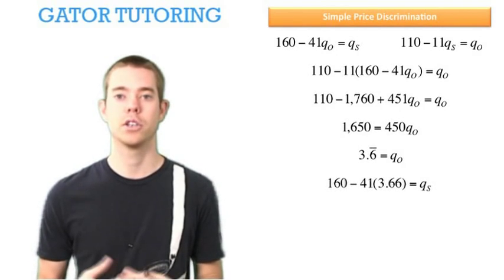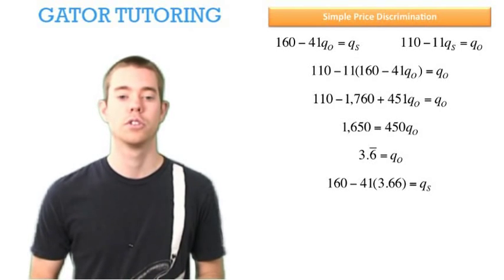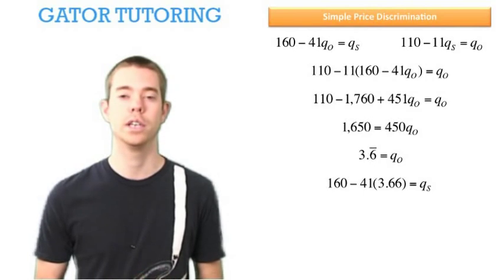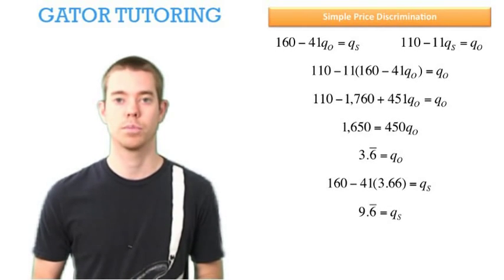I'll keep this in my calculator as 3.666 repeating. Now that I have QO, finding QS is easy because QS is a function of QO. From earlier, QS = 160 - 41QO. We plug in 3.666 repeating and find that QS = 9.6 repeating.